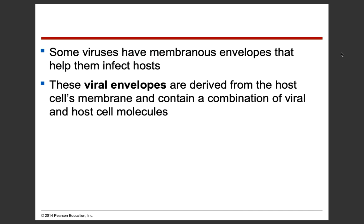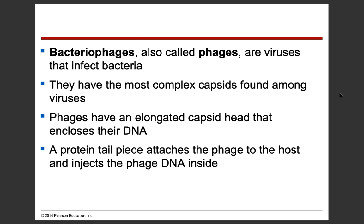Some viruses have membranous envelopes that help them to infect hosts. The membranes on the outside help protect the virus from the immune system before they can actually get into a cell. These viral envelopes are derived from the host cell's membrane and contain a combination of viral and host cell molecules. So the envelope comes from the host cell's membrane — if you have virus particles inside of you that have envelopes, they're stealing portions of your membrane in order to shield themselves from your immune system. If the outside of the virus looks almost exactly like the outside of your cells, your immune system is going to think it's supposed to be there. But really, they're disguising themselves to move around your body and infect other cells — incredibly intelligent, even though they're not alive.